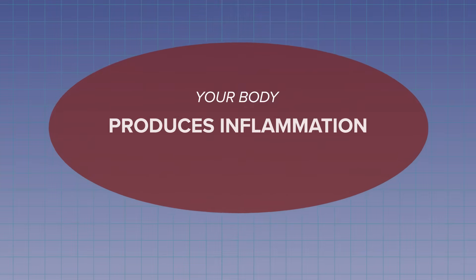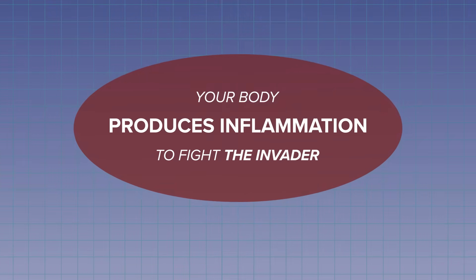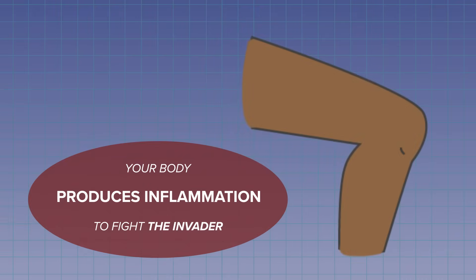Inflammation is a part of your immune system. Your immune system is there to protect you against infection or some type of invader or germ, and it does this through producing inflammation against the invader. For example, you get a cut or a scrape and then the inflammation process starts — the area might be a little red, a little swollen, and this is a sign of inflammation doing its job.